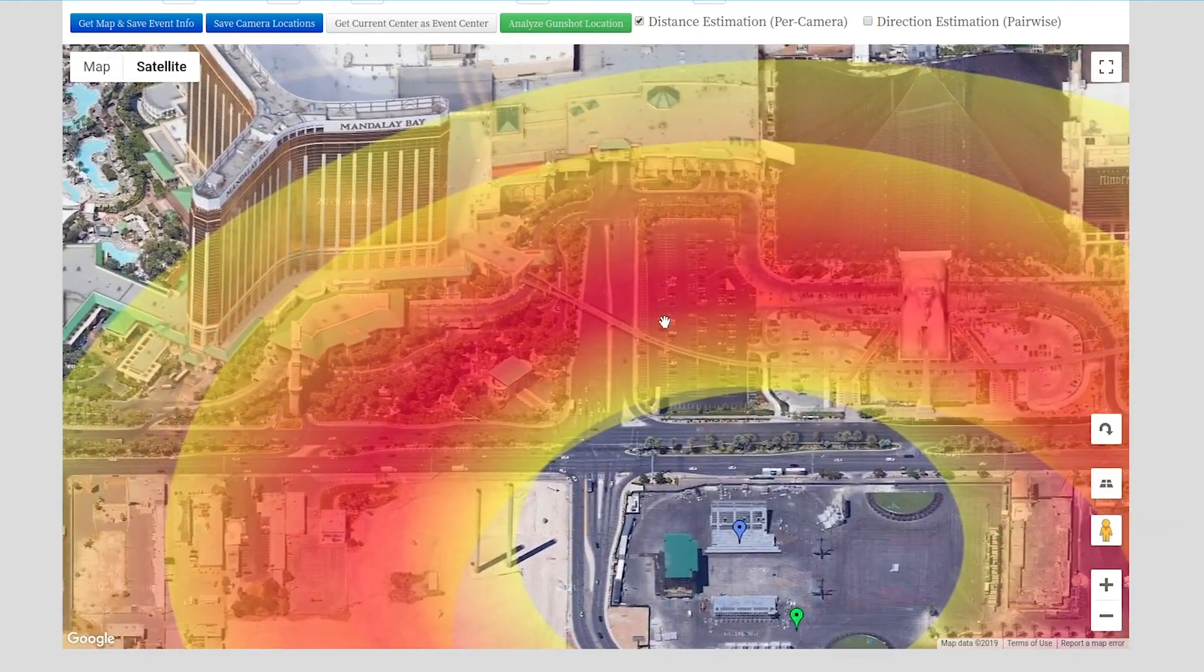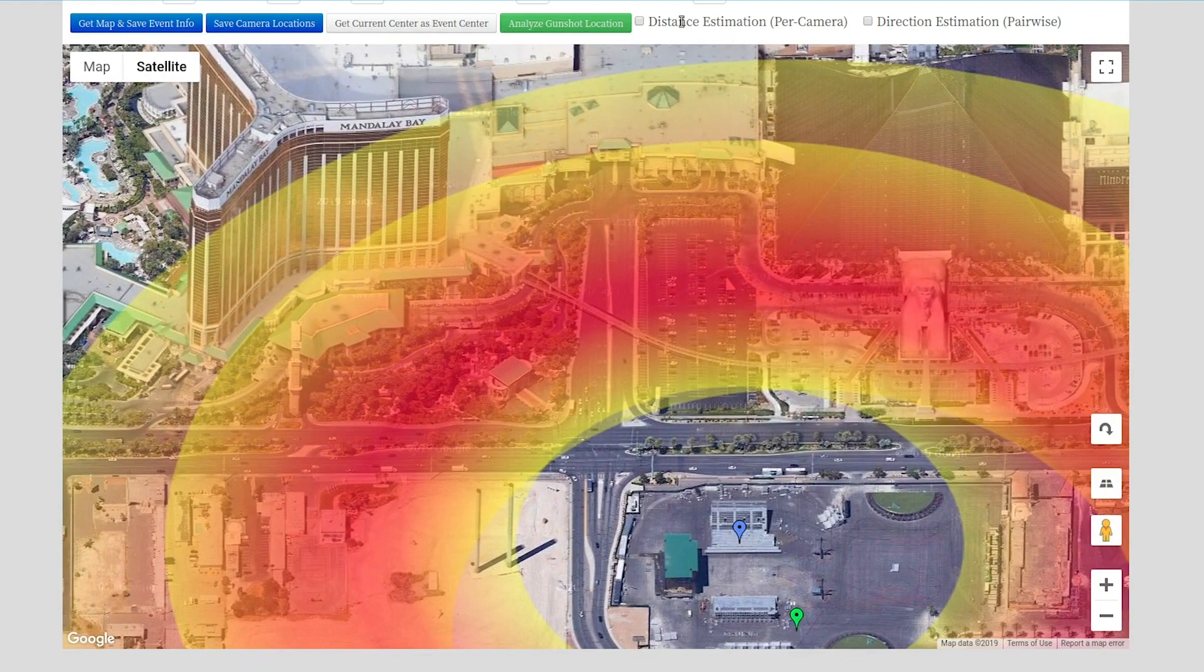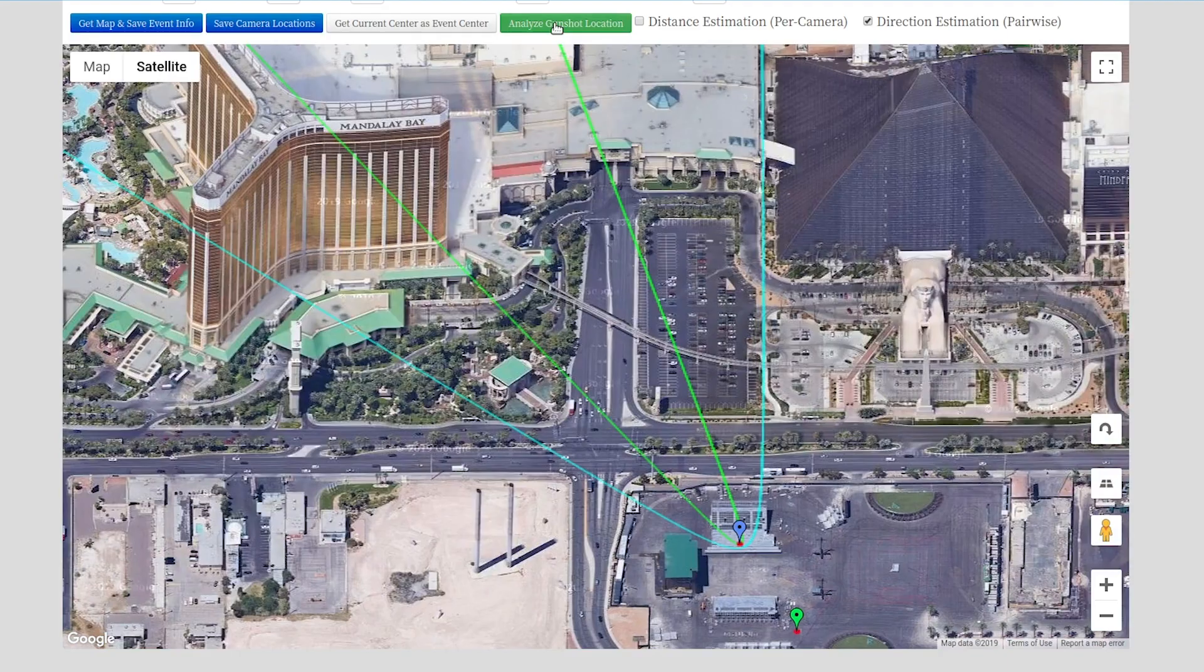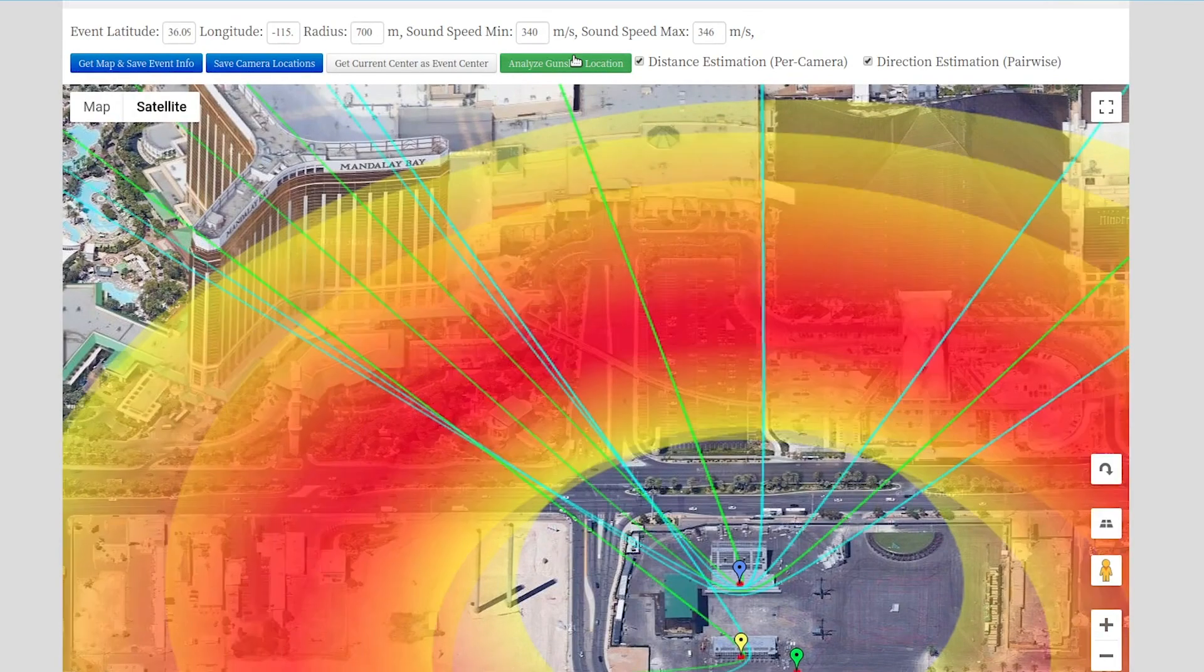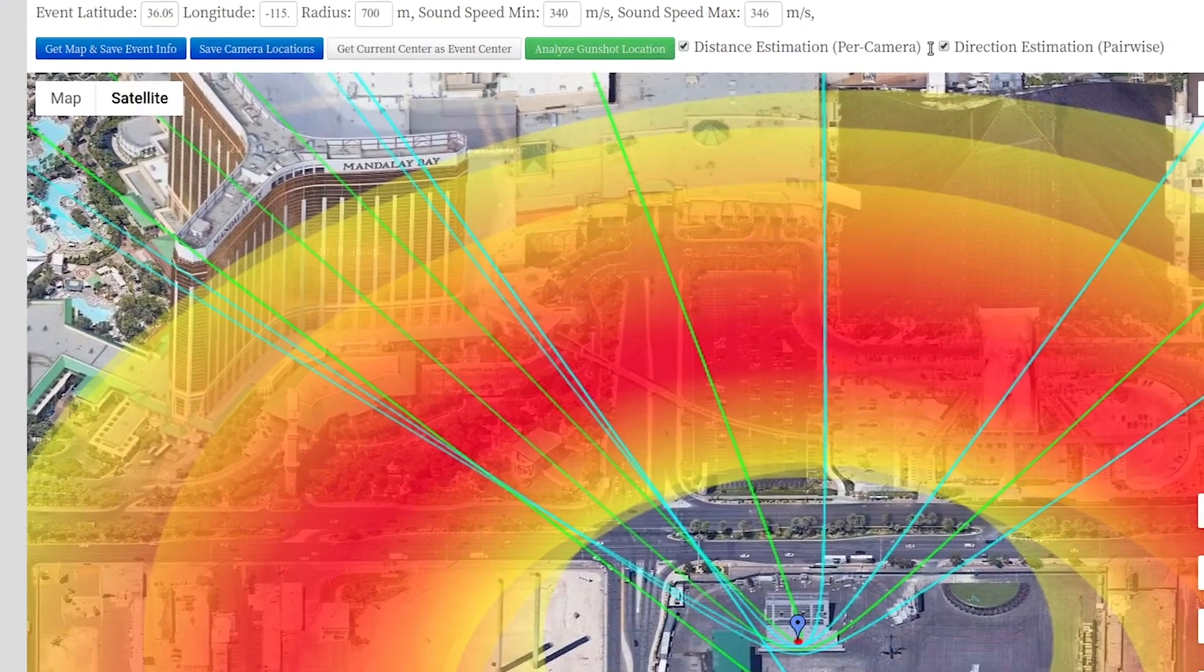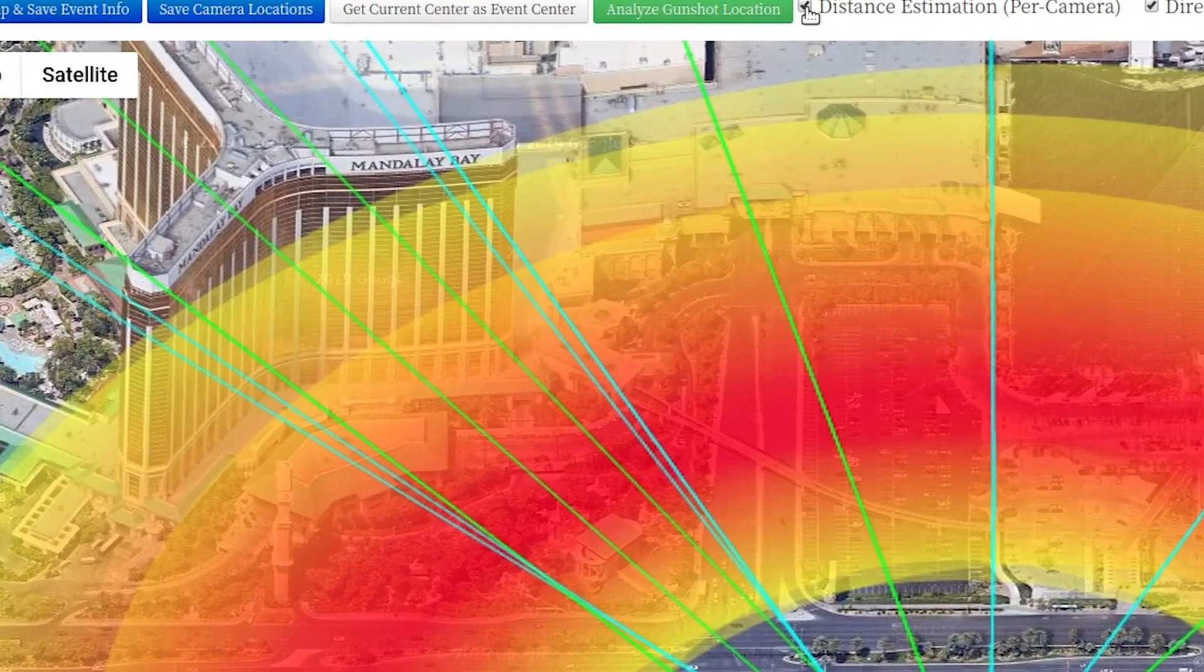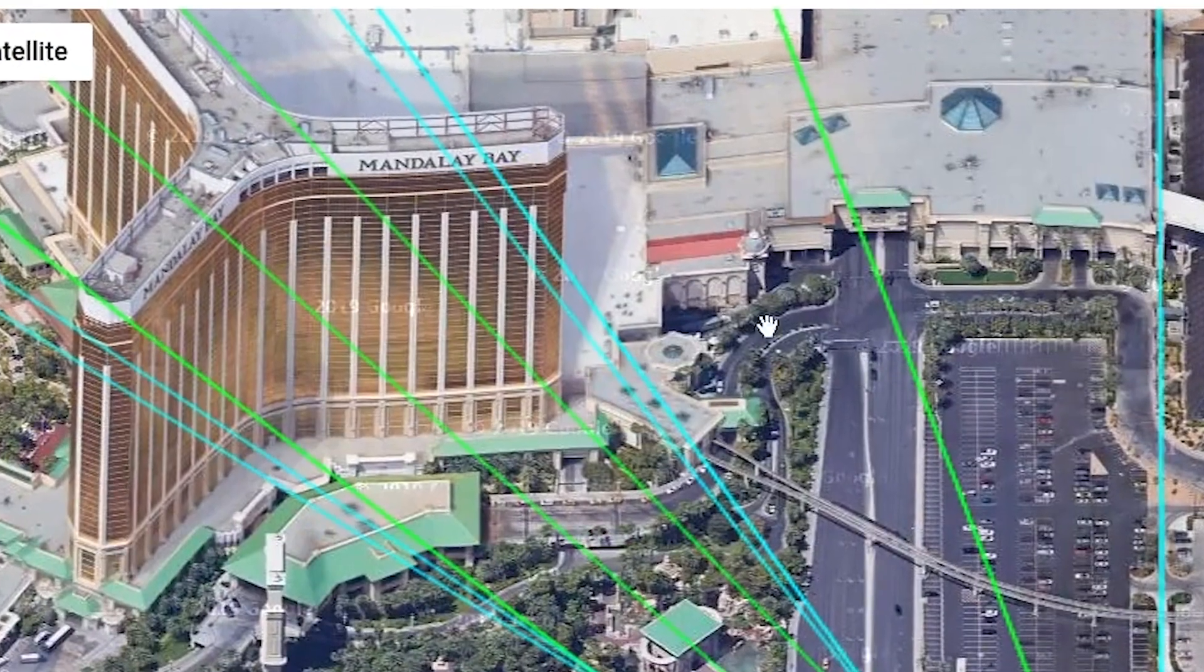When we have multiple cameras, we can not just tell how far away the shooter is, but we can also tell which direction by saying the sound, in this case just the muzzle blast, arrived at this camera first and then at this camera. Speed of sound is this and that means it came from that direction.